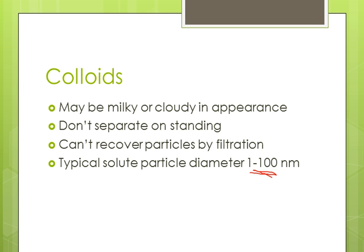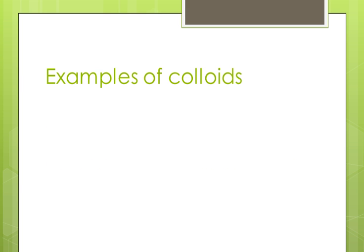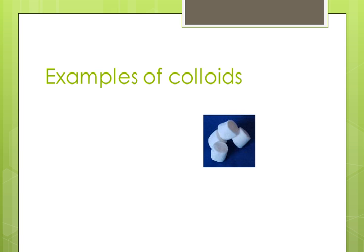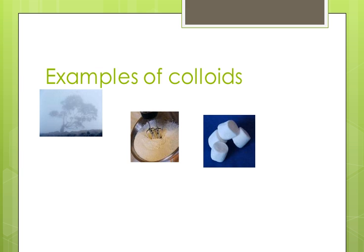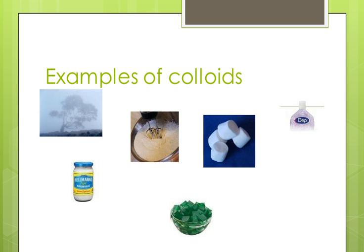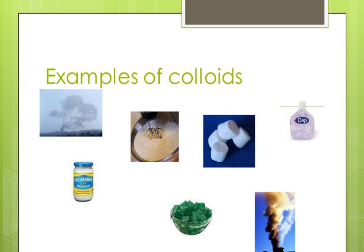Colloids have intermediate properties between solutions and suspensions. Some examples you may be familiar with: marshmallows, foams, whipped cream. Fog is a suspension of liquid water droplets. Mayonnaise is an example of a type of colloid called an emulsion. Jello, hair gels, and toothpaste are all different colloids. Fog can be colloidal, as can smoke. Milk is also colloidal in nature.